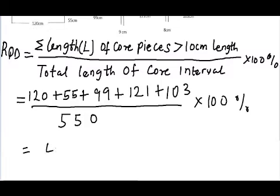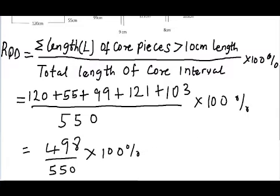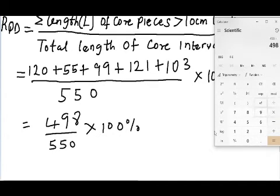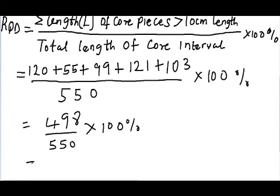We have 498 over 550 times 100%, divided by 550. So 0.9054 times 100. We have 90.5%.